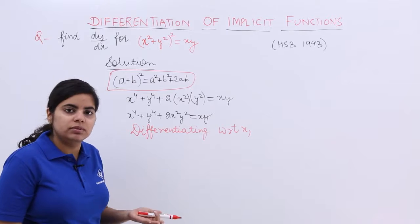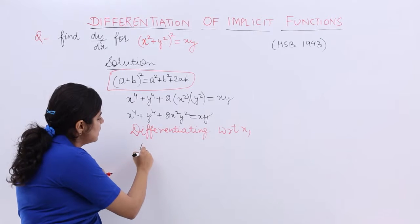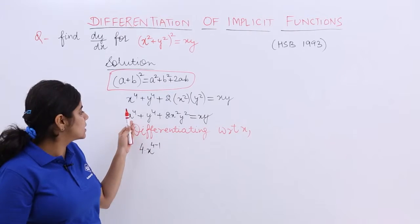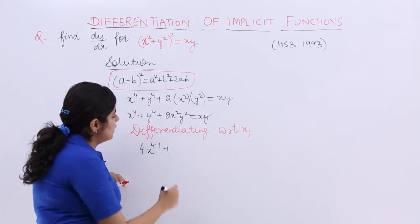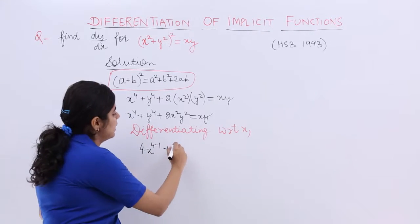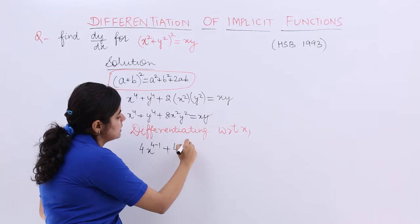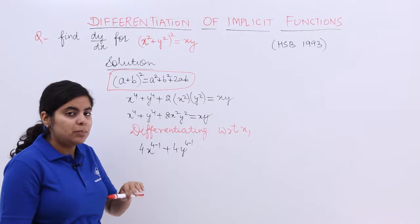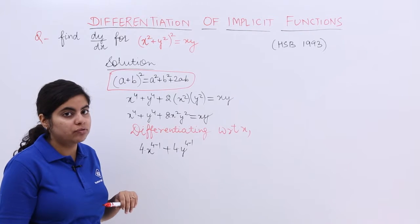Differentiating with respect to x. x raised to the power 4, the power formula directly it becomes nx^(n-1) means 4x³. y raised to the power 4, directly it becomes 4y³. But one thing needs to be taken care of.